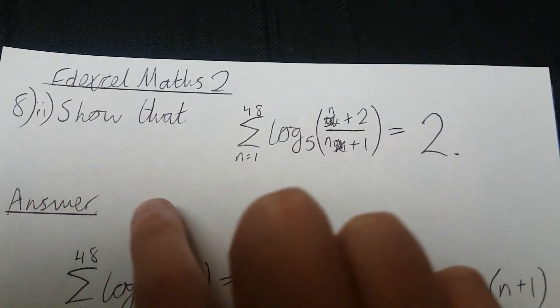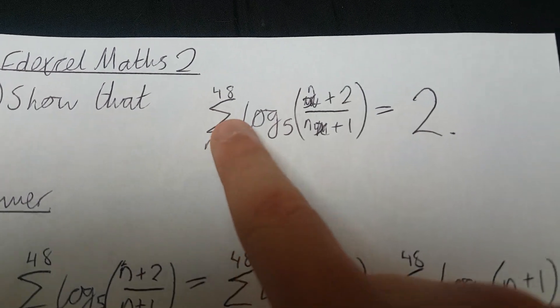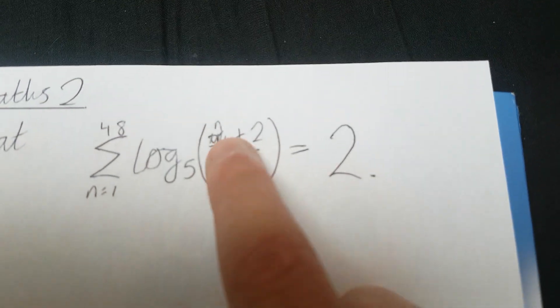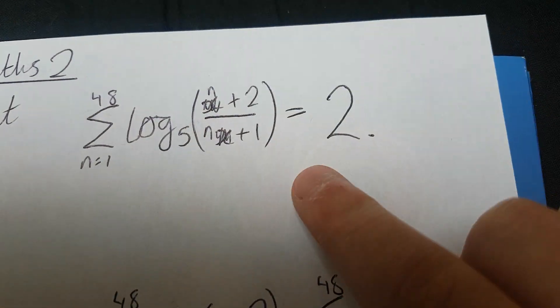Right. So we had this question, it showed that the sum from n equals 1 to 48 is of this monstrosity, ignore the scribbles, I accidentally wrote x instead of n, let's focus, equals 2.